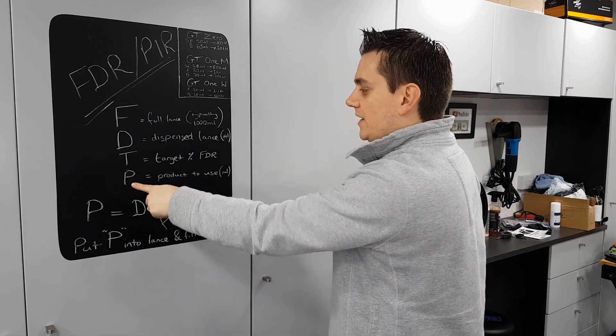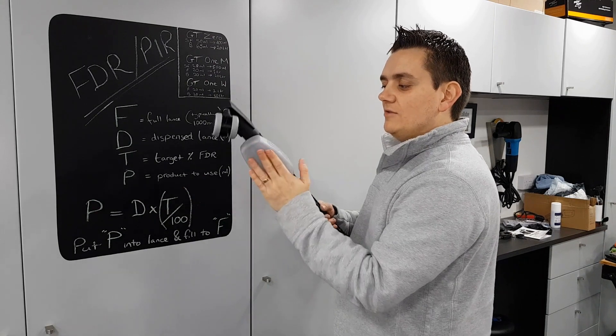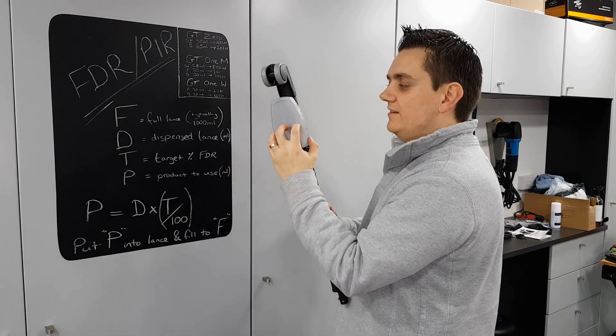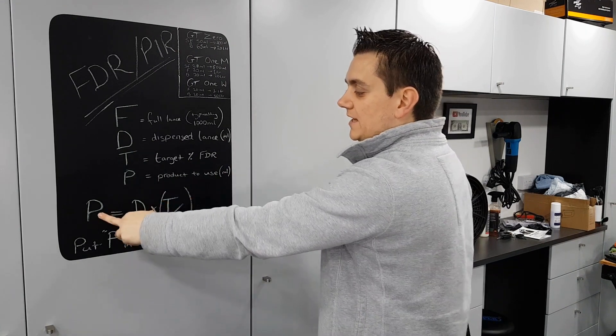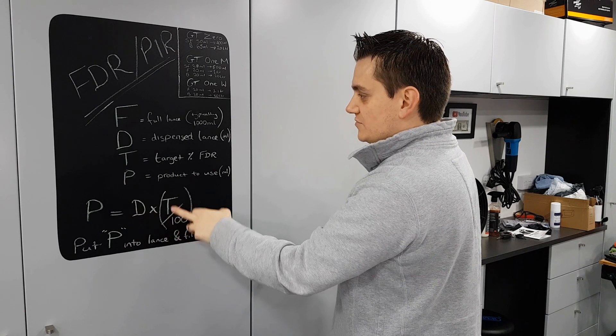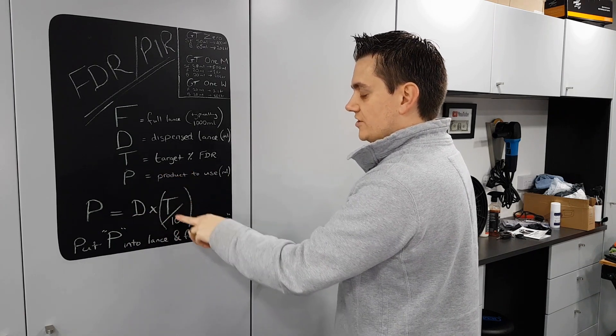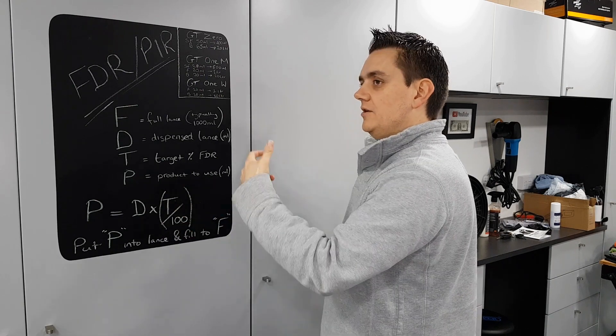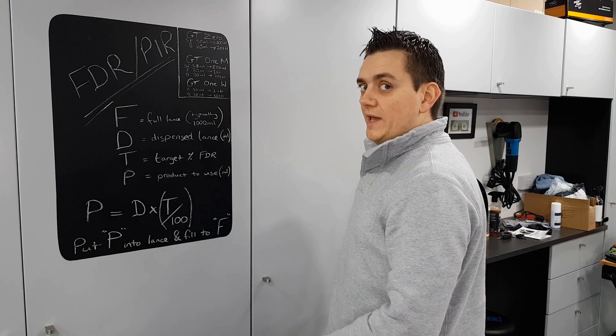T is your target FDR. So if your target FDR is three percent, then T equals three. And P equals the amount of product to use in milliliters. So that's the final amount of product that we need to know to put into this to get our three percent out the other end. So P is your dispensed lance times by your target impact ratio over 100. So you'll work out three over 100, which will be 0.03, times that by your dispensed lance and that will give you your P.